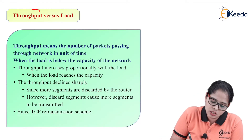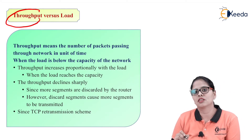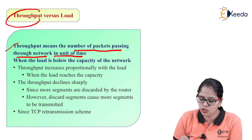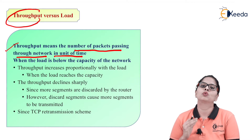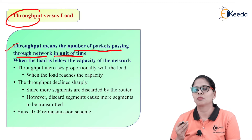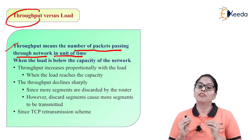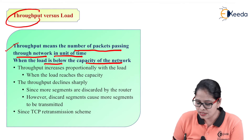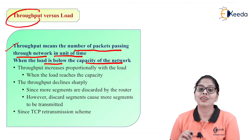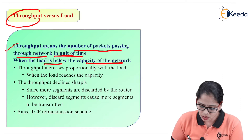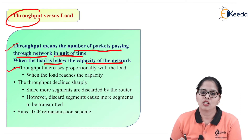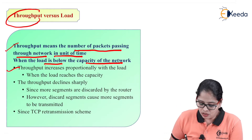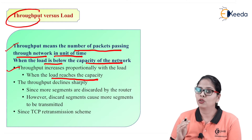Now let us discuss the next factor: throughput. Throughput means the number of packets passing through the network in unit time. If more packets are passing through the network, throughput is higher; if fewer packets pass, throughput is lower. When the load is below the capacity of the network, throughput increases proportionally with the load.